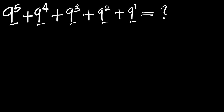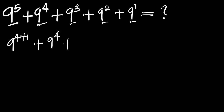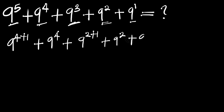What we are going to do first is, instead of 9 to the power of 5, we can write it as 9 to the power of 4 plus 1. Here we have 9 to the power of 4, and instead of 9 to the power of 3 we can write it as 9 to the power of 2 plus 1, plus 9 to the power of 2, plus 9.